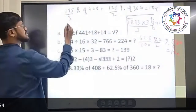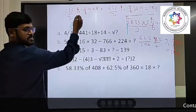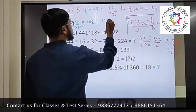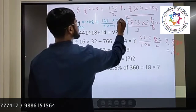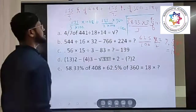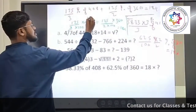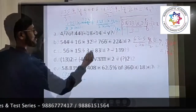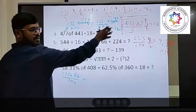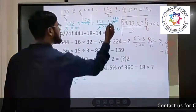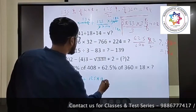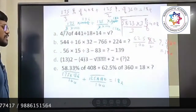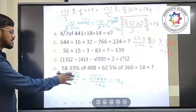Now it is easy. Percentage means divide by 100, so: 175 divided by 100 into 408, plus 125 divided by 2 into 360, divided by 100, equals 18x. Now solving: 3 goes into 408 — 136 times. So 175 into 136, keeping 100 as is. Also 125 into 180 divided by 100 equals 18x. Multiply these out, add them, then divide by 18. What is 175 into 136?